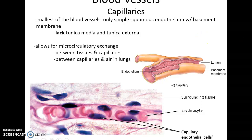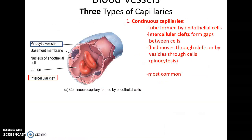Capillaries are the smallest of the blood vessels — just one simple thin layer of simple squamous endothelium and its basement membrane, no tunica media, no tunica externa. This allows for microcirculatory exchange between the tissues and the capillaries, or exchange between the capillaries and the air in the lungs. There are three kinds of capillaries.